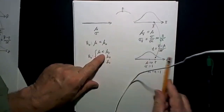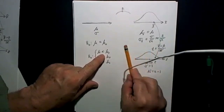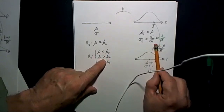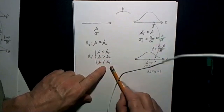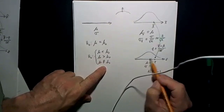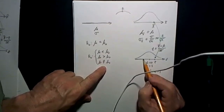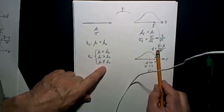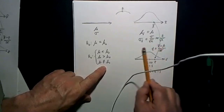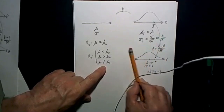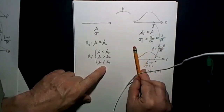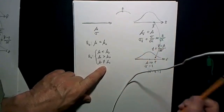If we're doing a lower-tail test, the p-value is the area below that T value. If it's a two-tailed test, it's a little more complicated: if T is positive (upper tail), find the area above it and multiply by two; if T is negative (lower tail), find the area below it and multiply by two.